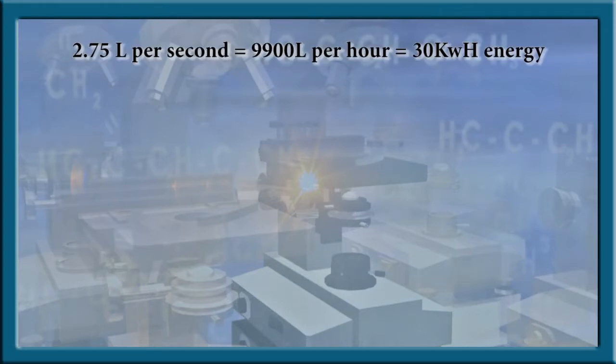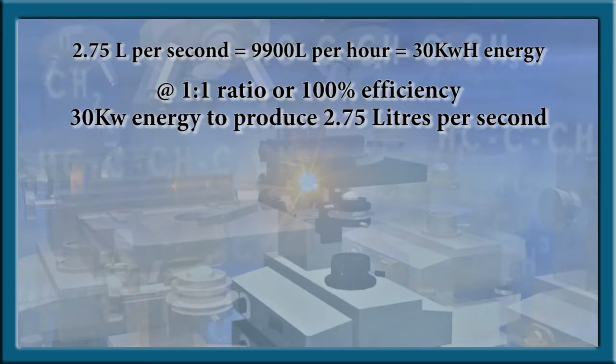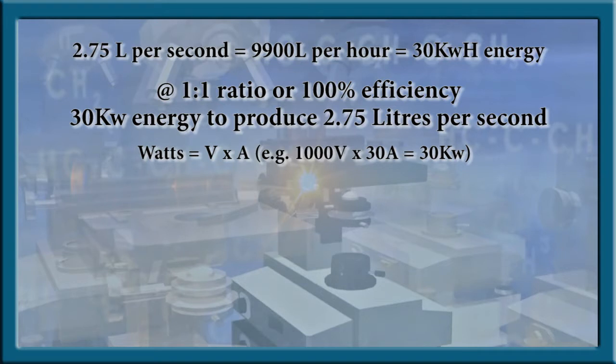Now, for some equations. In the series of tests, we were achieving an average of 2.75 liters per second, which equates to 9900 liters of hydrogen per hour, delivering an output energy content of about 30 kilowatts rounded off. So, in reverse, for an energy factor of 1 to 1, it would require a constant input power of 30,000 watts or 30 kilowatts to produce the 2.75 liters per second. Wattage is a factor of volts times amps. For example, 30 amps times 1,000 volts equals 30 kilowatts. The test videos showed the average current draw to be 15 amps.